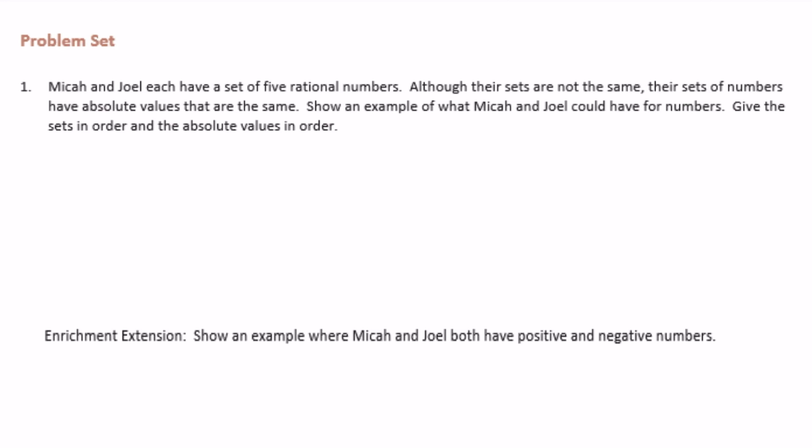6th grade module 3 lesson 12 problem set. Number 1: Micah and Joel each have a set of 5 rational numbers. Although their sets are not the same, their sets of numbers have absolute values that are the same. Show an example of what Micah and Joel could have for numbers. Give the sets in order and the absolute values in order.